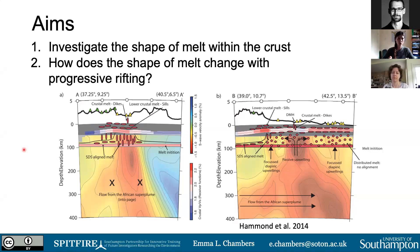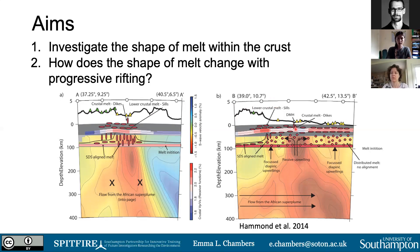Some of this work has been looked at already. This is a paper by James Hammond in 2014 where they looked at different sources of anisotropy. You can see that at mantle depths — along the rift, beneath the plateau, and going down into the rift — there are good constraints at mantle depths. But at crustal depths, while they think there are some lower crustal melts in sills and also some dikes beneath some of the magmatic segments, the constraints are harder to define, based on SKS splitting results from local earthquakes and a surface wave study in the Main Ethiopian Rift.